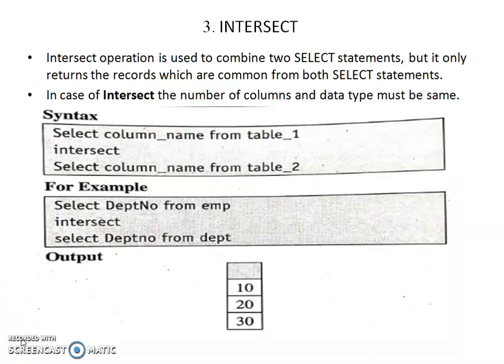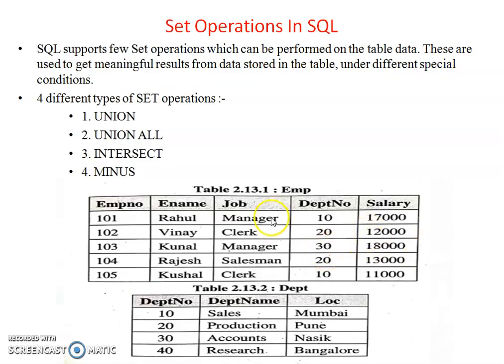Now we discuss the INTERSECT operation. The INTERSECT operation is used to combine two SELECT statements but it only returns the records which are common to both SELECT statements. The INTERSECT operator returns only those rows which are common to both queries. The number of columns and data types must be the same. For example: SELECT department_number FROM employee INTERSECT SELECT department_number FROM department. The output is 10, 20, 30.